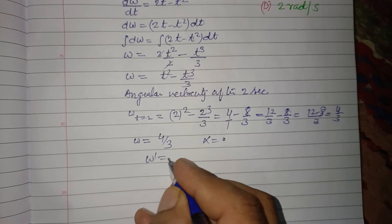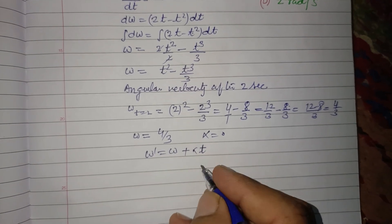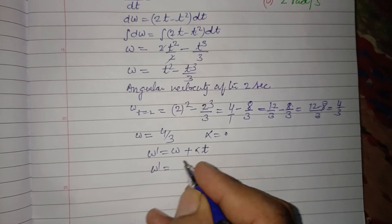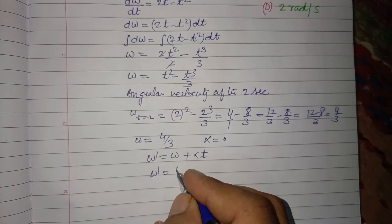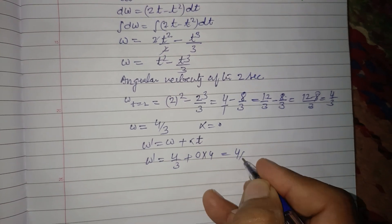So ω' = ω + αt. ω' after 4 seconds is 4/3 plus 0 times 4, so this is 4/3.